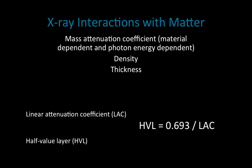The half value layer really depends on the atomic number of the material — and that makes sense for lead. It also depends on the density of the material and the energy of the x-rays that we're trying to stop.